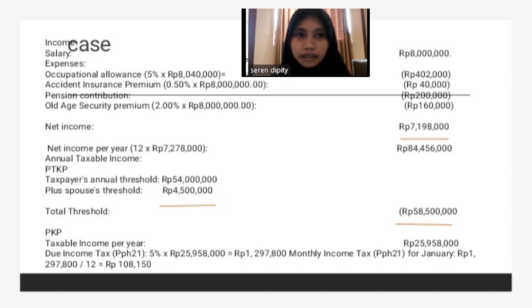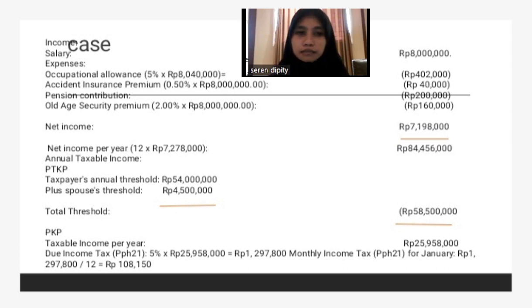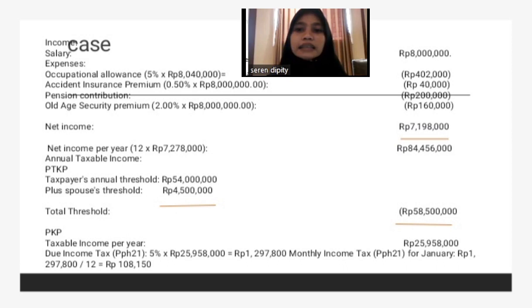The first step: the salary is 8 million rupiah. Then we calculate the expenses, which include occupational allowance (biaya jabatan) at 5%, accident insurance premium, pension contribution, and social security premium, as applicable to his case. We deduct 8 million minus expenses: 402,000, 40,000, 200,000, and 160,000, which equals 7,198,000 rupiah as the monthly net income.